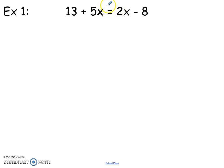For example 1, we've got 13 plus 5x equals 2x minus 8. First thing we need to do is collect all our variables on the same side. So I can either undo adding 5x by subtracting it from each side, or undo a positive 2x by subtracting it from each side. Both ways will work. To me, it's going to be easier to subtract 2x from each side because subtracting 5x from each side would make a negative answer.